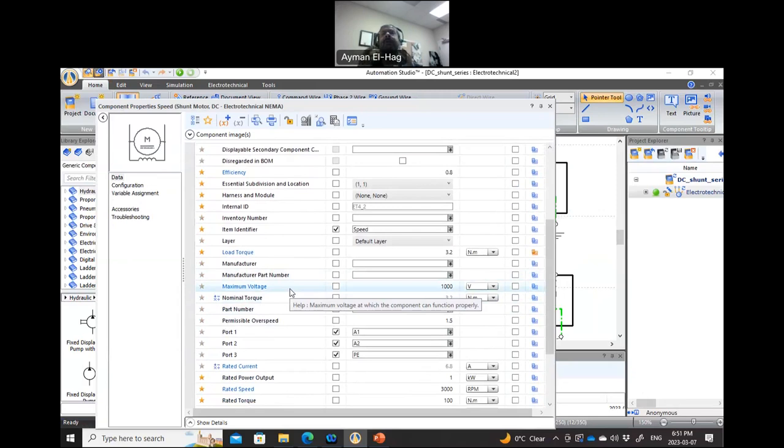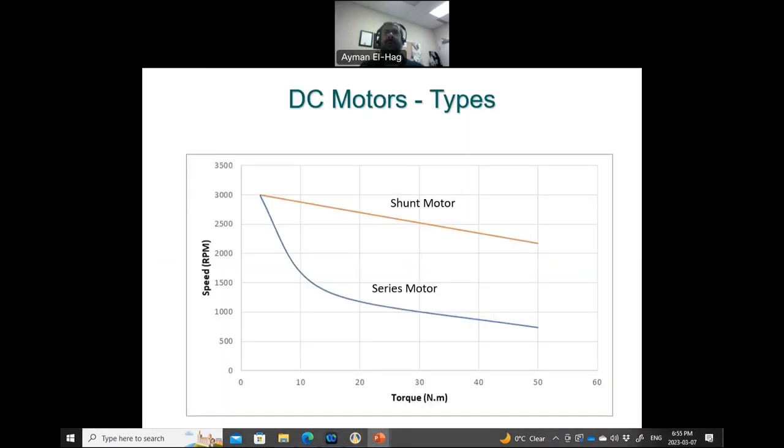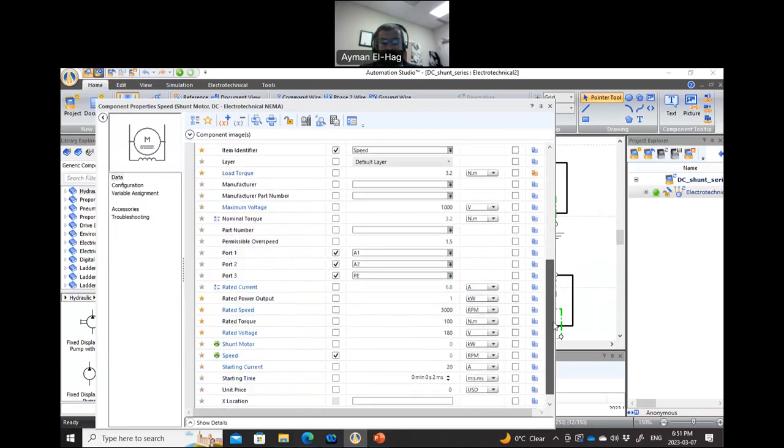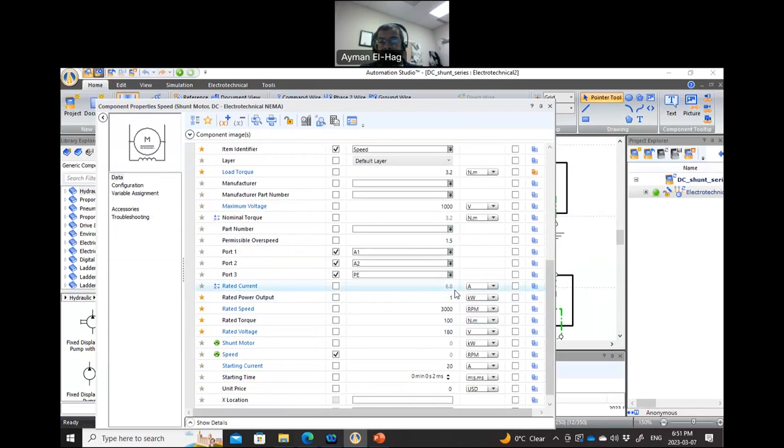So for this machine, it's 3.2 Newton meter. There is the rated current: 6.8 amp. When you work at no load, this is the current that you will have. The rated speed or the no-load speed is around 3,000 RPM. The rated torque, the maximum torque you can apply is 100 Newton meter, and your rated voltage is 180 volt.